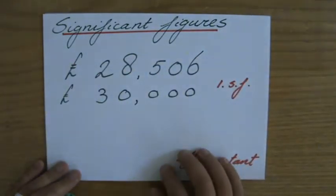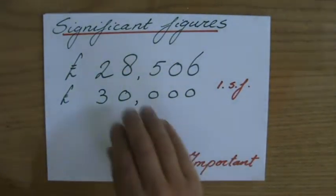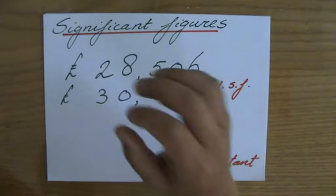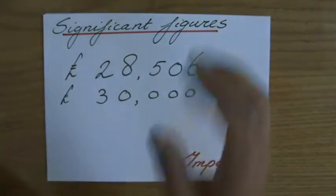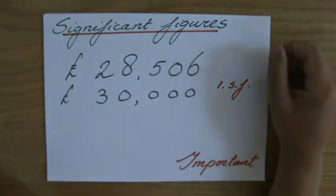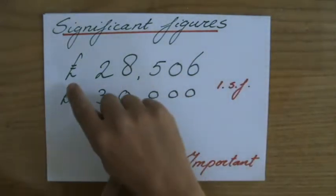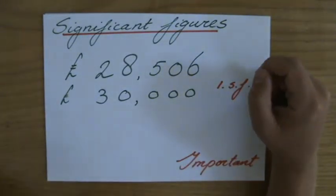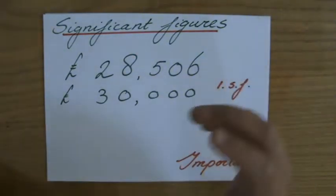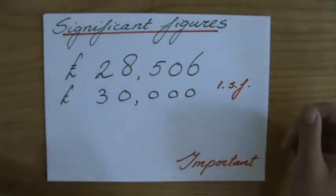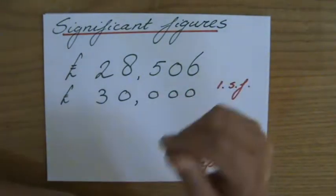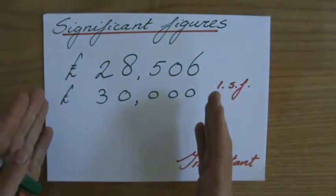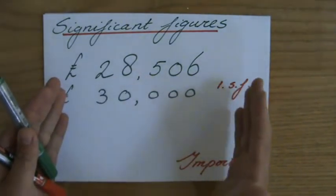The more significant figures you have, the more accurate your number is. If somebody tells me they have 28,506 pounds in their bank account, I know exactly how much that is — it's very accurate. If somebody tells me they have 30,000 pounds, I know they have roughly that amount — perhaps a little less, perhaps a little more — but it's less accurate. More significant figures means a more accurate answer.